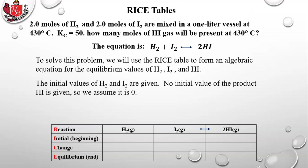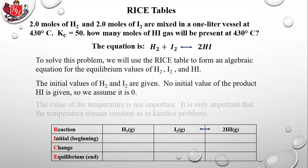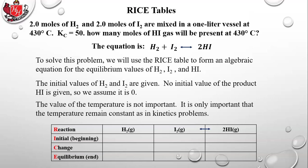To solve this problem, we use a RICE table to form an algebraic equation for the equilibrium values of H2, I2, and HI. The initial values of H2 and I2 are given. No initial value of the product HI is given, so we assume it's zero — if they don't give you a value for the product, assume it's zero. So the initial concentrations are 2.0 for H2, 2.0 for I2, and zero for HI.